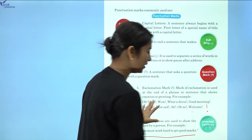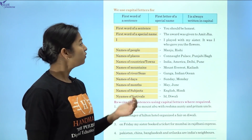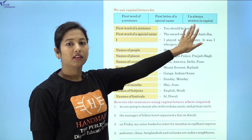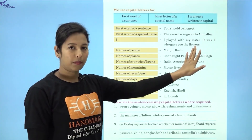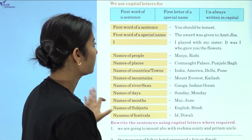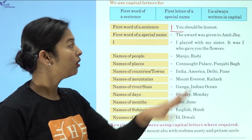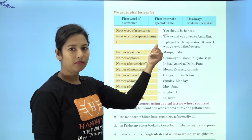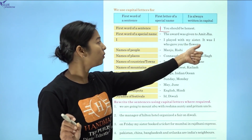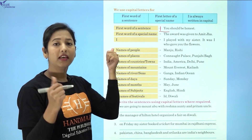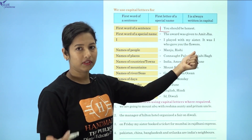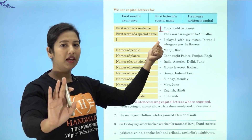Now let's understand more about capital letters. Capital letters are used for the first word of a sentence, and the first letter of a special name. There is also an exception — 'I' is always written in capital. For example, 'You should be honest' — here Y is in capital. 'The award was given to Amit Jha' — Amit Jha is a name of a person, so it starts with a capital letter. 'I played with my sister.' Even when 'I' appears in the middle of a sentence, it is always written in capital.